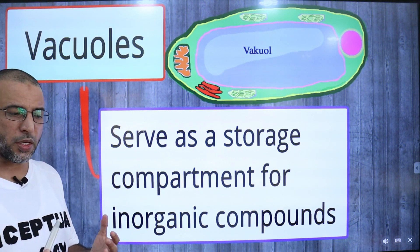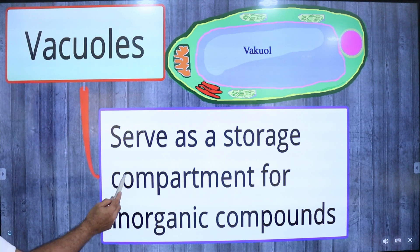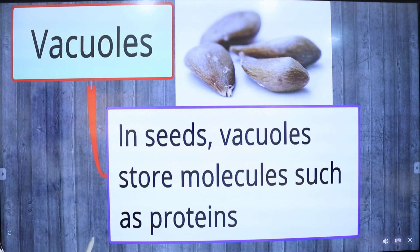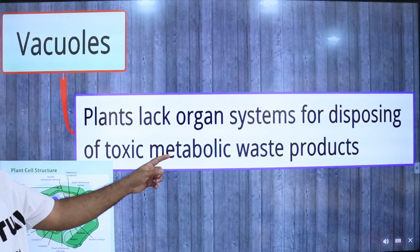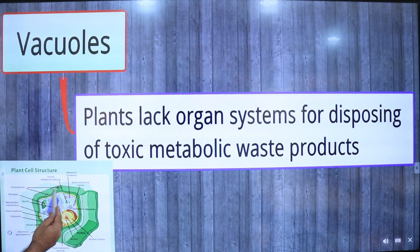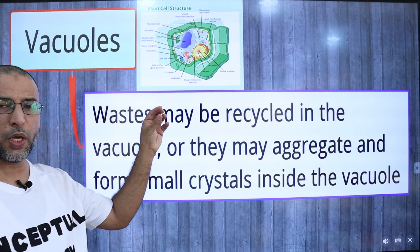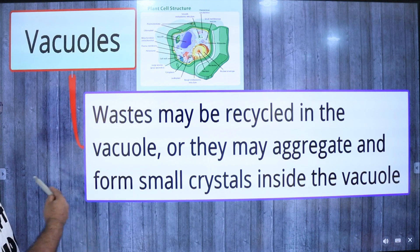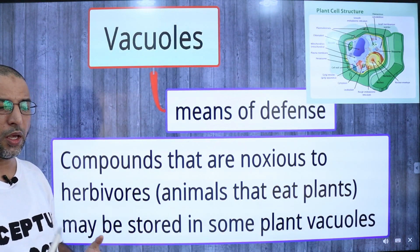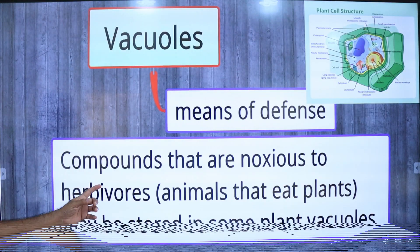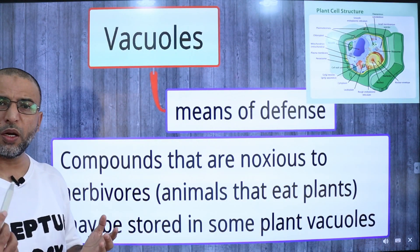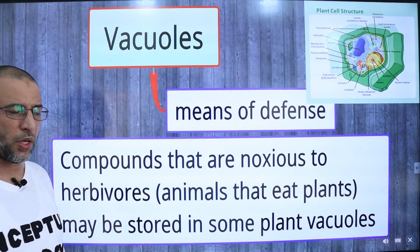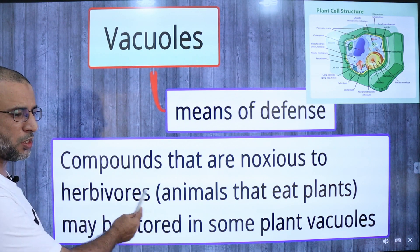Vacuoles serve as a storage compartment for inorganic compounds. In seeds, vacuoles store much of the protein. Toxic metabolic waste products are also stored in vacuoles. Metabolic waste may be recycled in vacuoles or they may aggregate and form small crystals inside the vacuole. Plants use vacuoles as a means of defense — compounds that are noxious or injurious to herbivores may be stored in some plant vacuoles.